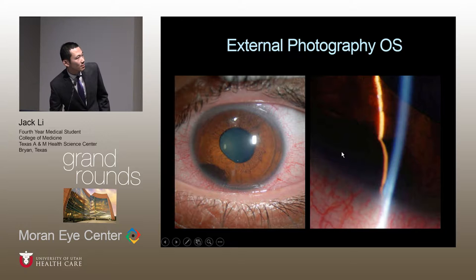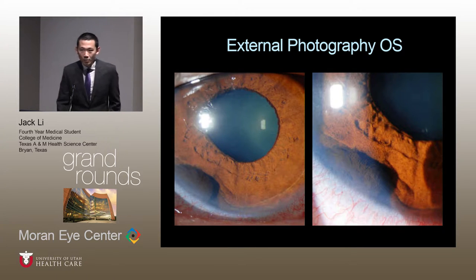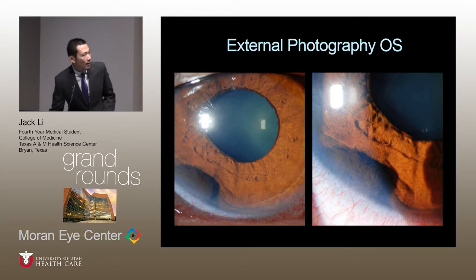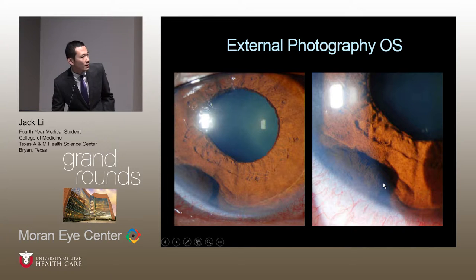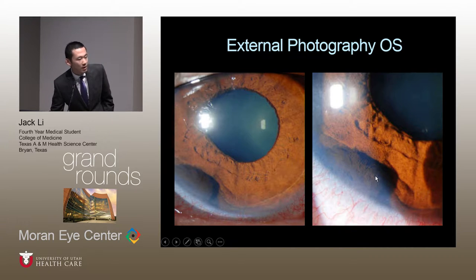On slit beam examination, this appears to be a 3D lesion which seems to be protruding out into the anterior chamber. On a more magnified photo, we get more detail of the anterior surface of this lesion. This appears to be a dark, opaque, melanocytic lesion. Interestingly, the shadow cast by the beam also demonstrates that this is a 3D lesion which protrudes outward.